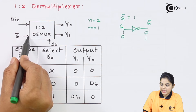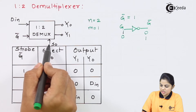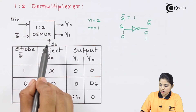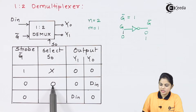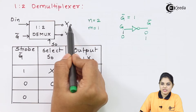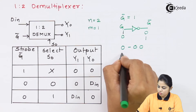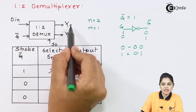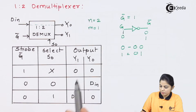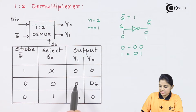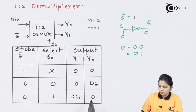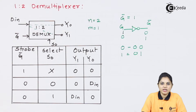If G-bar is equal to 1, it is taken as low and the D-mux output will remain 0 regardless of the select line. That is why strobe should equal 0. If strobe equals 0, output will be produced according to the select line. For S0 equal to 0, which represents decimal 0, the data input is connected to Y0 — so D-in goes to Y0 and Y1 remains 0. Similarly, if select input S0 equals 1, it selects Y1, meaning D-in will go to Y1 while Y0 remains 0.